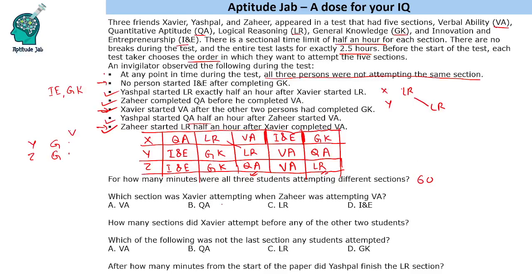Which section was Xavier attempting when Zaheer was attempting VA? Zaheer was attempting VA in slot 3, and Xavier was attempting I&E at that time. How many sections did Xavier attempt before any of the other two students? Xavier attempted QA before any other student, LR before anyone else, and VA before anyone else — so he attempted three sections before anyone else.